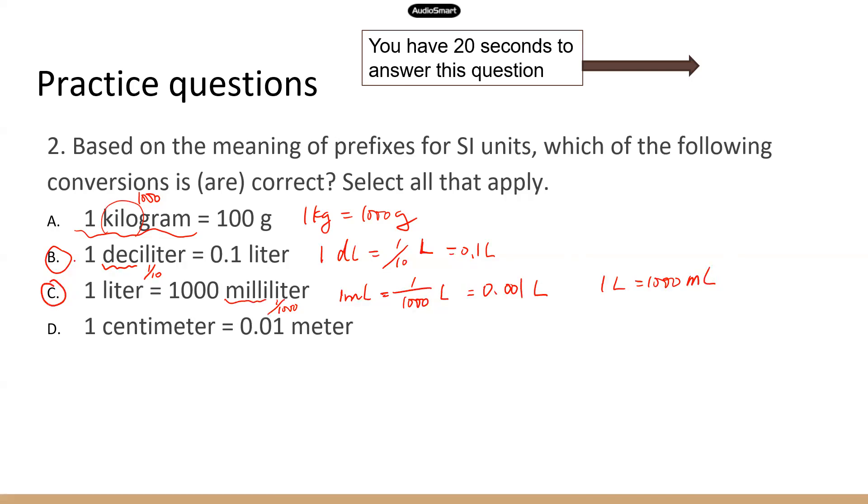Last one. One centimeter is 0.01 meter. And that's correct. Because centi means one hundredth. So one centimeter is one hundredth of a meter or 0.01 meter. And if we do it the other way around, one meter would be 100 centimeters.